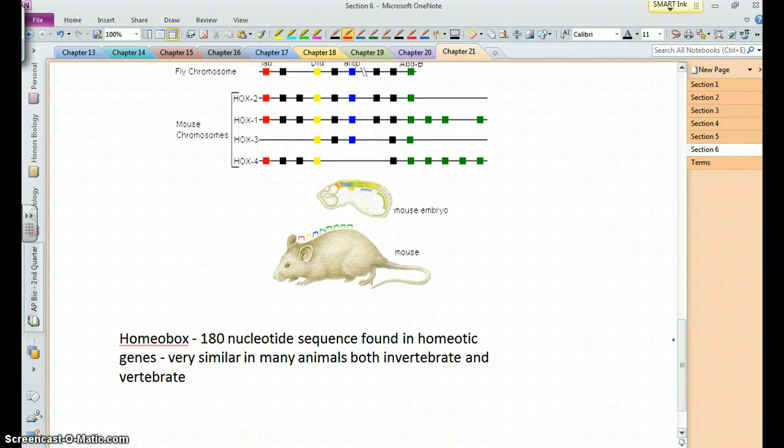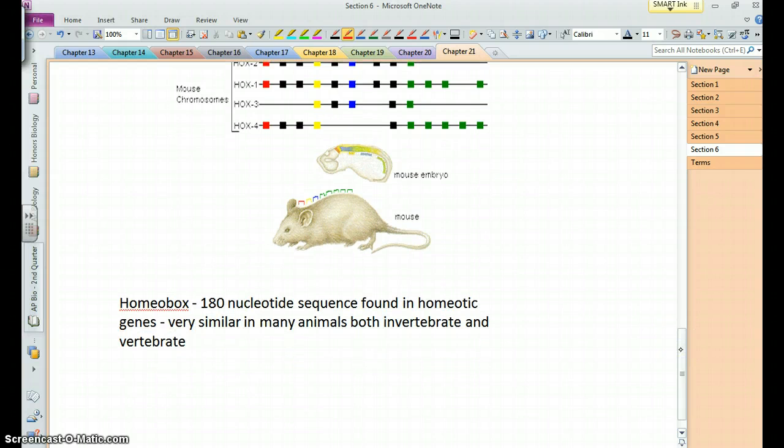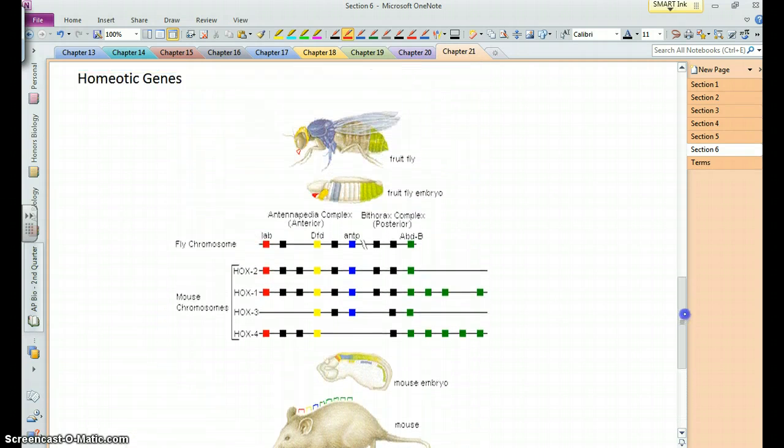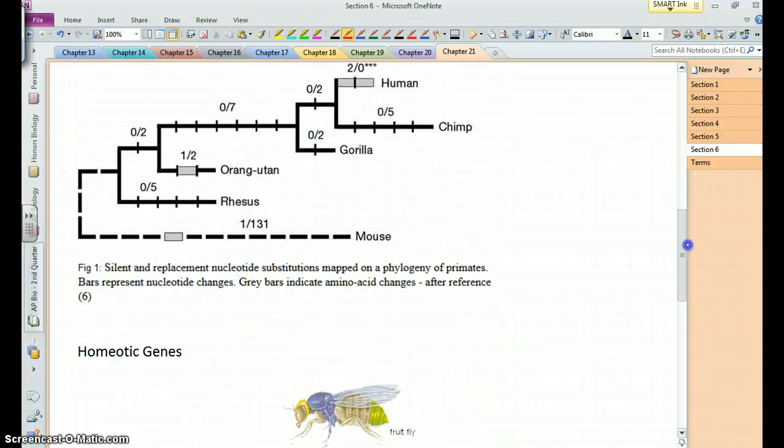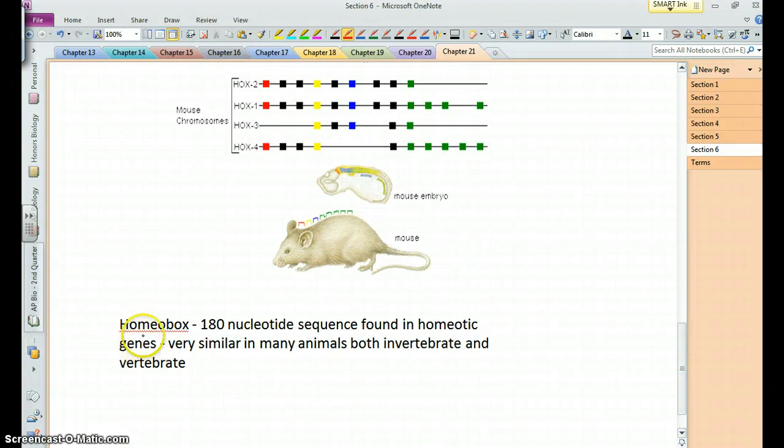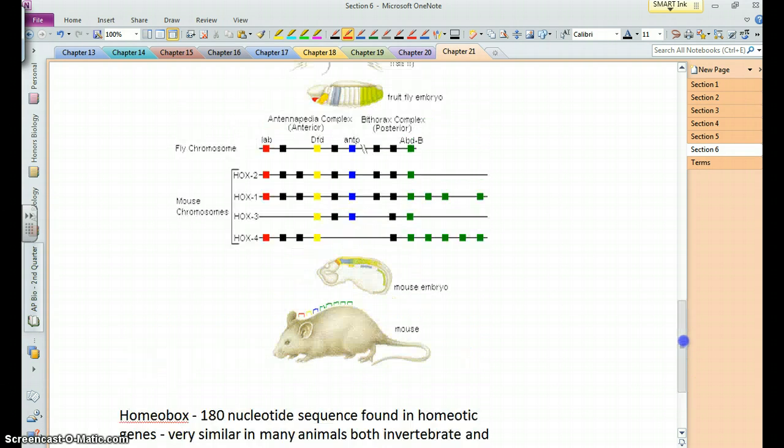And this part of homeotic genes called homeobox is mentioned in the book. It's a sequence that's found throughout organisms. And the slight variations that exist between it have allowed for the changes that have occurred in these organisms. Also would allow us to do, I'm sure you could create a family tree or a phylogeny based on this homeobox portion of homeotic genes.